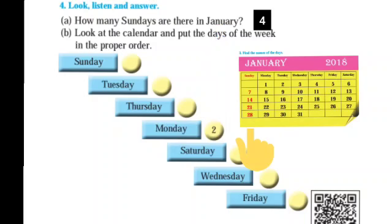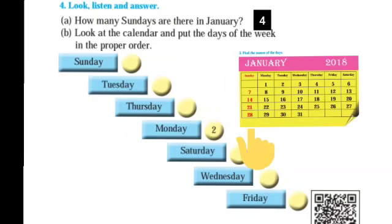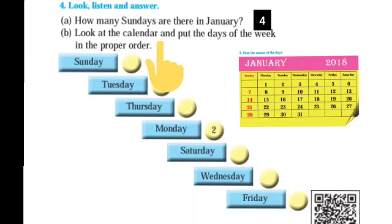In the month of January, how many Sundays came? In the given calendar, 4 Sundays are visible — on the 7th, 14th, 21st, and 28th. So there are 4 Sundays. Activity B: Look at the calendar.